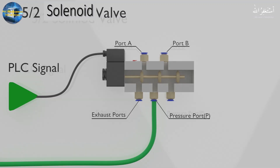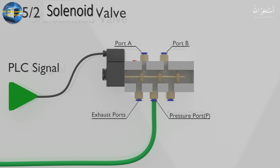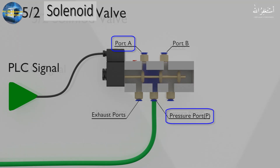The 5/2 way valve has 5 ports for compressed air. One of these ports is the P port — it is the pressure port where compressed air enters the valve. There are two other ports: port A and port B. The pressure port is linked with either port A or port B when the spool inside the valve moves.